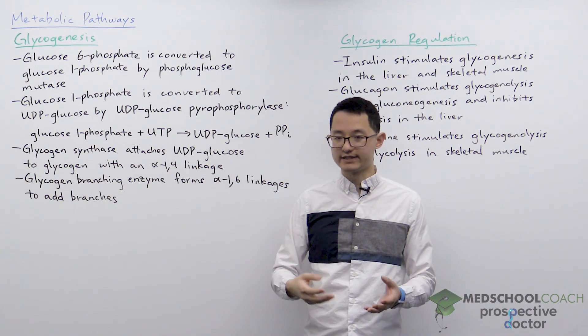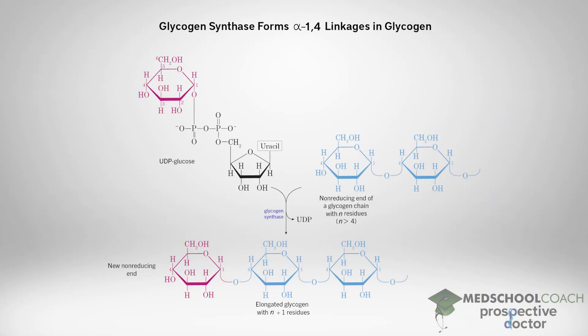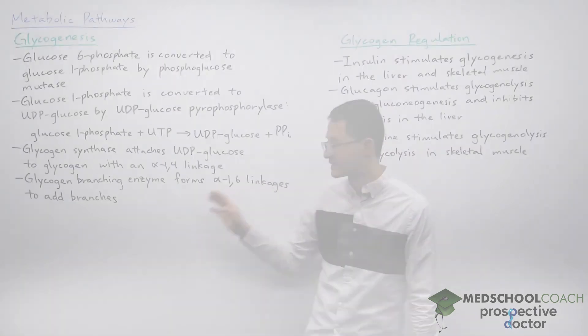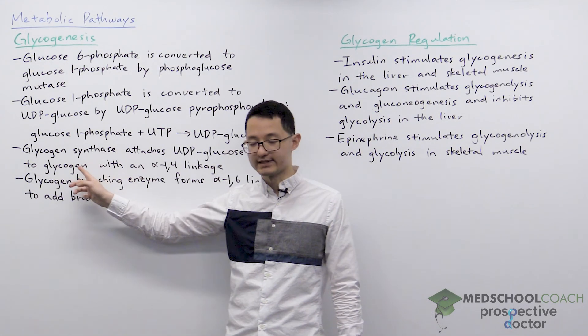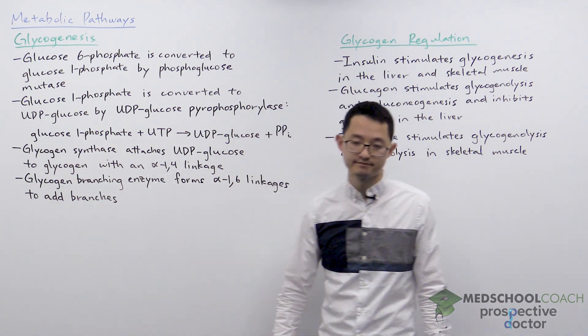As you can see in this diagram, the UDP glucose is used to extend the glycogen chain using alpha-1,4 linkages. This is catalyzed by the enzyme glycogen synthase.